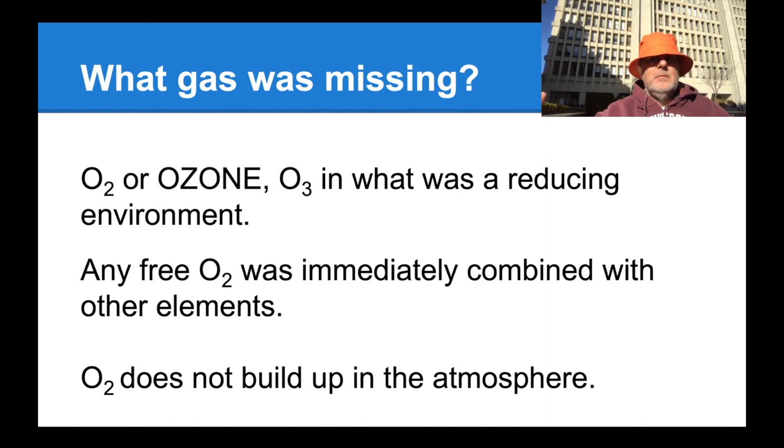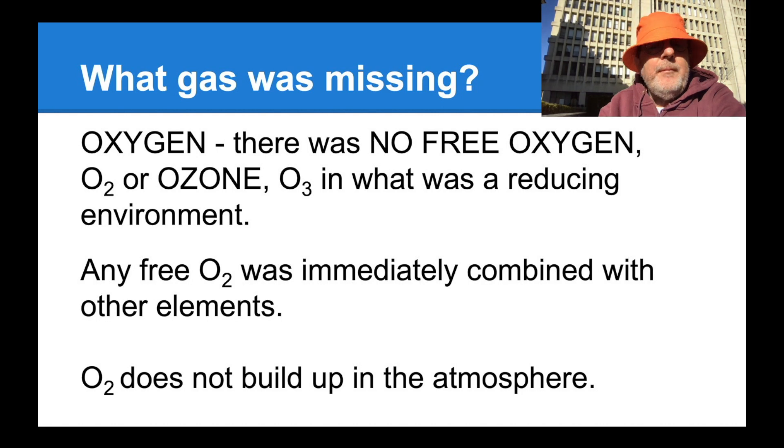What was missing? Oxygen or ozone. Ozone is also known as O3. But we had what was called a reducing environment at this time. Any time oxygen was released and free, floating around the atmosphere was immediately combined with other elements to form rocks, for instance, silicates or iron oxides, sulfates, so many different oxygen forming minerals. O2, therefore, does not build up in the atmosphere. There was no free oxygen in the atmosphere.